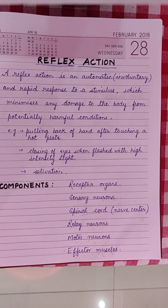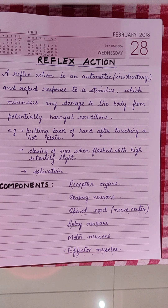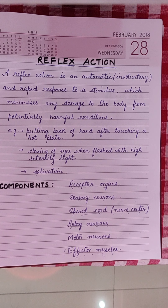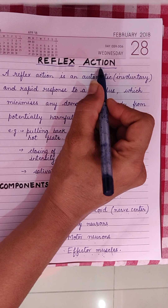Good morning students. Last week we started the second chapter of biology, control and coordination, and we studied the structure of a neuron and how different impulses are transmitted from one neuron to the next. Today we start a very simple and small topic of this chapter: reflex action.